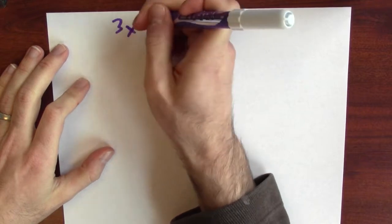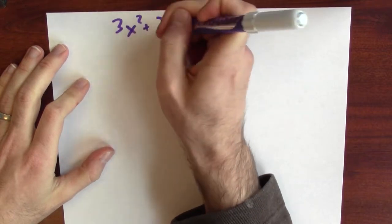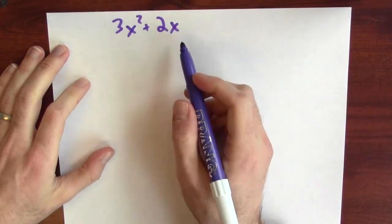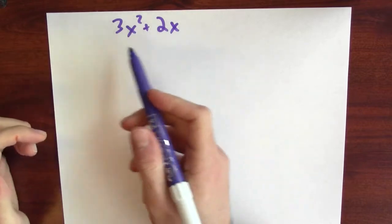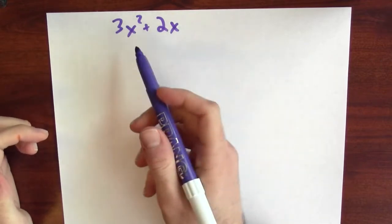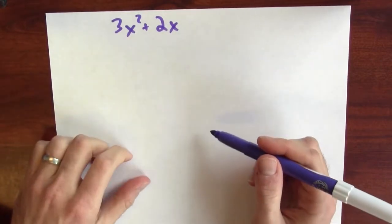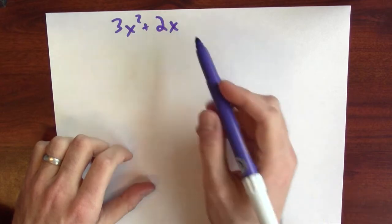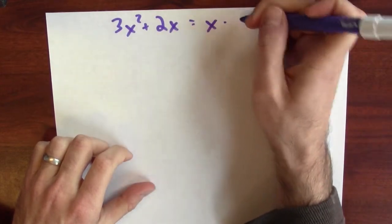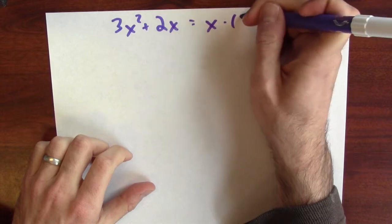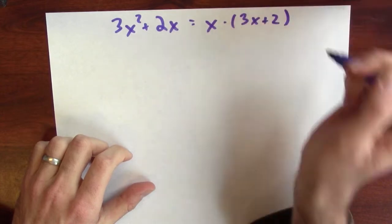Once we know this, we can figure out where the derivative is positive and where it's negative. The derivative was 3x squared plus 2x, and I want to know where that's positive and negative — which values of x make it bigger than 0, and which make it less than 0. One approach is to factor 3x squared plus 2x as x times (3x plus 2).